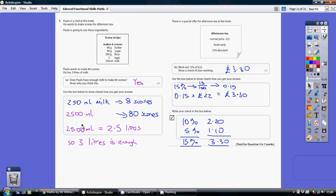2,500 milliliters is 2.5 litres. He's got 3 litres, so yes, he does have enough milk.